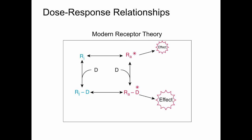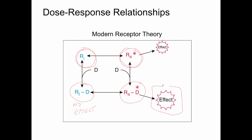Maximal effect is achieved when the receptor is in the active conformation and bound to drug. Receptors can exist normally in an inactive state and an active state even in the absence of bound ligand, due to thermodynamic changes in the shape of the receptor. If a drug binds to the inactive state of the receptor, there's no effect. If the drug binds to the active state, we get a maximal effect. This gives us a nice start on understanding pharmacodynamics and dose-response relationships.